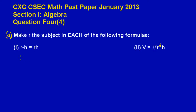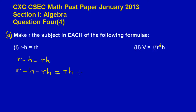So R minus H is equal to RH. The objective is to bring all the R's to one side of the equation and everything else to the other. Since this is a positive RH, I am going to subtract RH from both sides to group all my R's on one side. So I have R minus H minus RH, which equals RH minus RH. Remember what I do to one side of my equation I have to do to the other side, so I subtracted RH on both sides to keep the equation balanced.